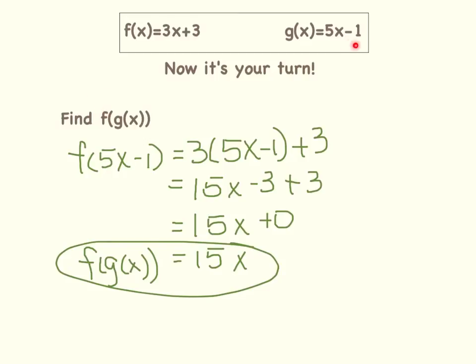So that means I am taking this 5x - 1 and I will be substituting it for the x in the 3x + 3. So that is why I rewrote it like this. Instead of saying f(x), I have f(5x - 1). So that means 5x - 1 will be substituted for what was the x right here.